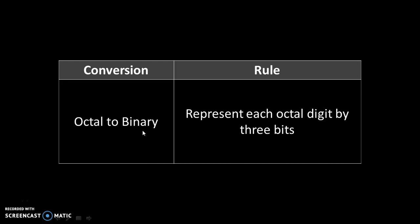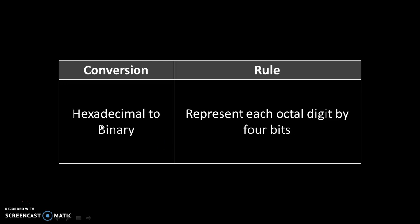Octal to binary: represent each octal digit by 3 bits. Hexadecimal to binary: represent each hexadecimal digit by 4 bits.